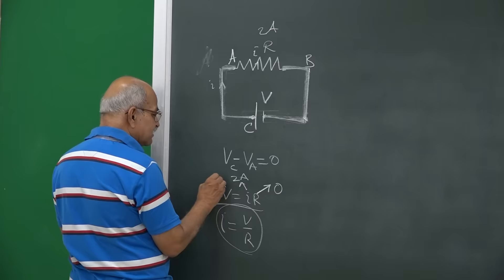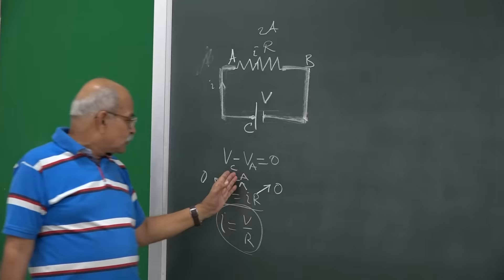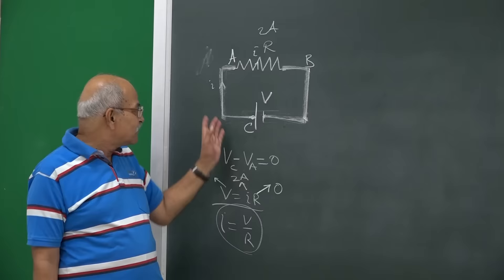this I is 2 amperes and the potential difference is 0, perfect, no problem. 2 amperes multiplied by 0 will give you 0. V equals IR, Ohm's law is perfectly followed here.